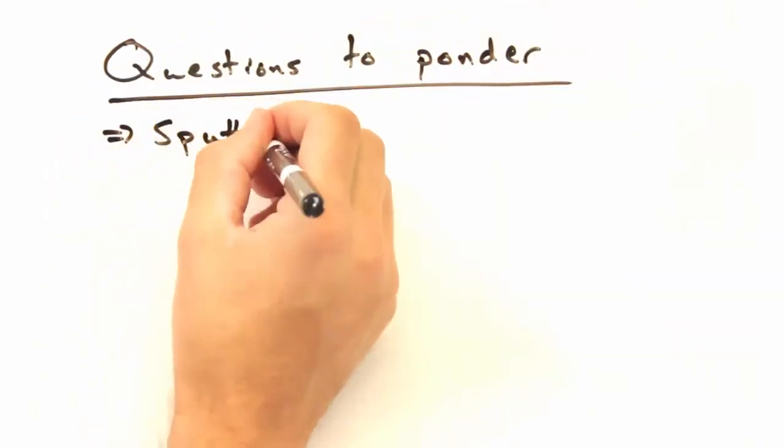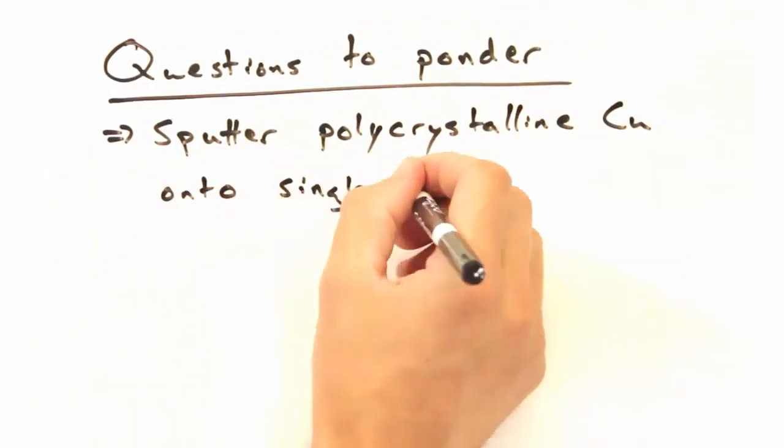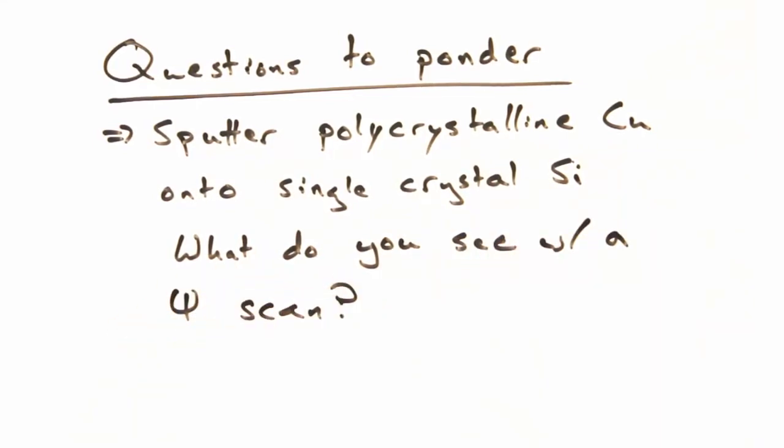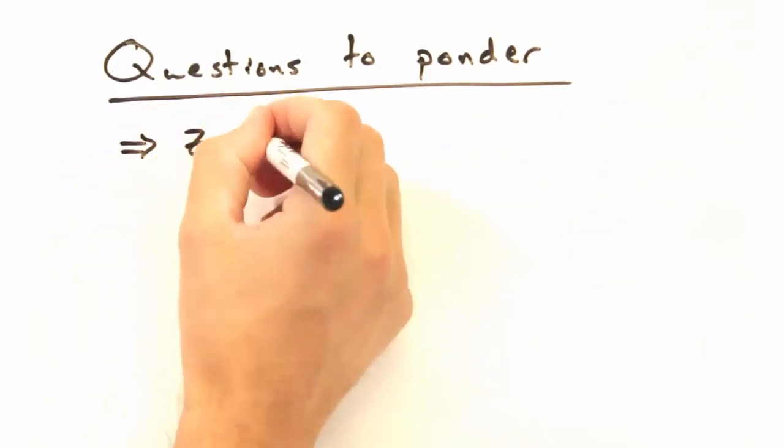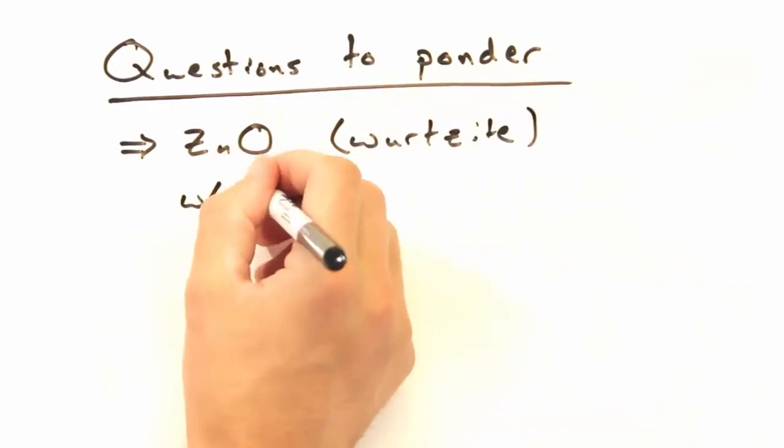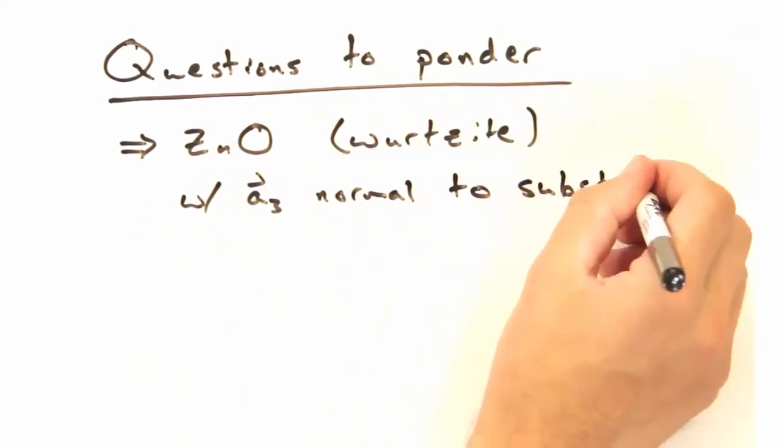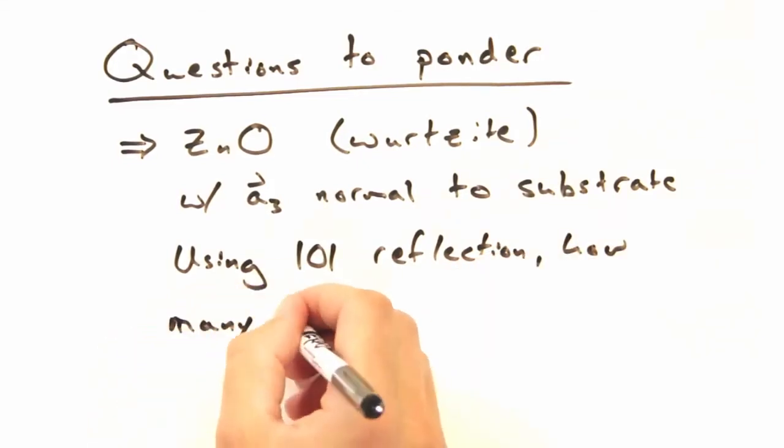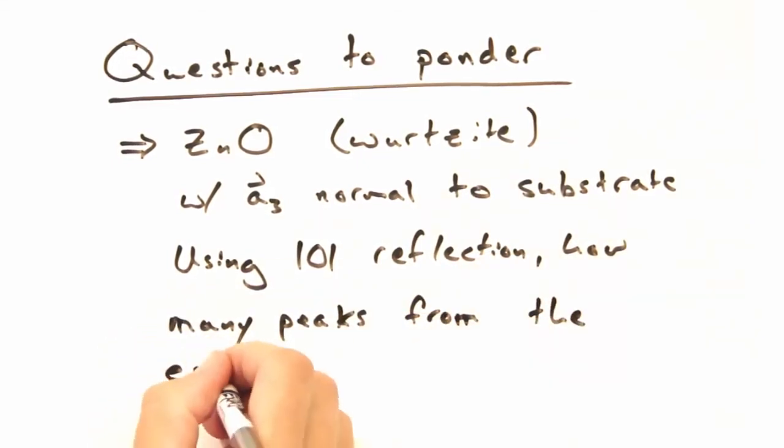Here's one to ponder on your own. If you sputtered polycrystalline copper down on silicon, what would you see with a phi scan? And here's another. You've grown a zinc oxide wurtzite film with the A3 axis normal to the substrate. If you use the 101 reflection, how many peaks will you pick up?